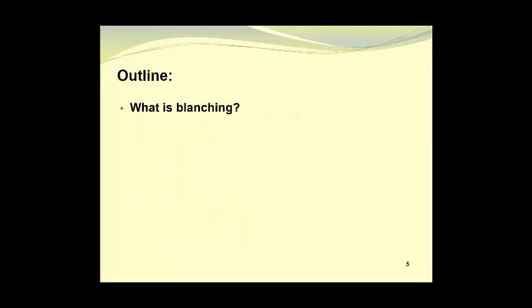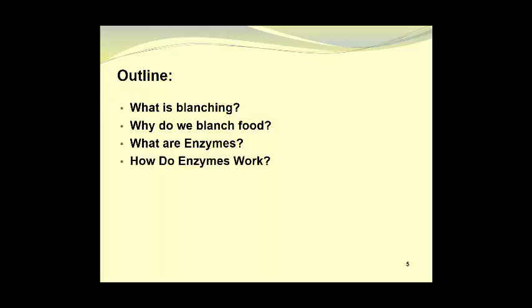We will begin by defining what is meant by the term blanching and explain why we blanch food products. For those of you who are unfamiliar with enzymes, we will explain what enzymes really are and how they work. Then we will move on to enzymatic browning and take a look at a couple of examples of enzymes, including catalase and peroxidase. Then we will move on to blanching of food products.